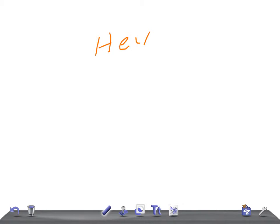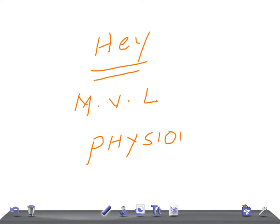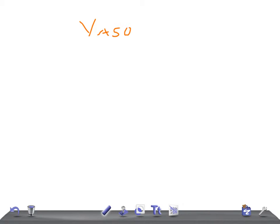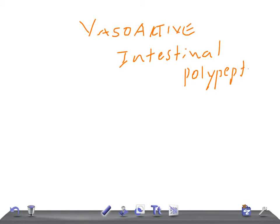Hey guys, welcome back. This is a medical video lecture on physiology. In this video we're going to talk very briefly about vasoactive intestinal peptide, also known as VIP hormone. This is a polypeptide.